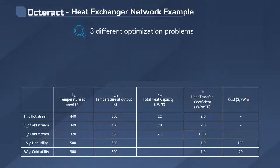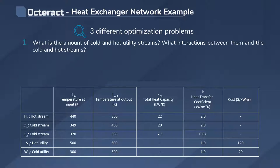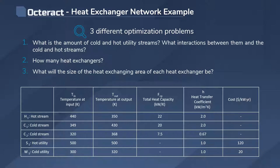Namely, what is the amount of cold and hot utility streams to be used in the process? How many heat exchangers are needed for the interactions between streams and utilities?